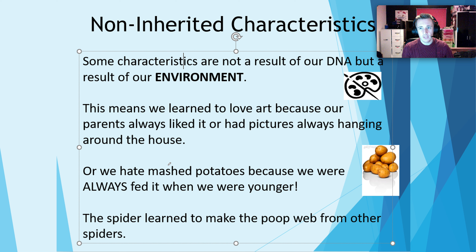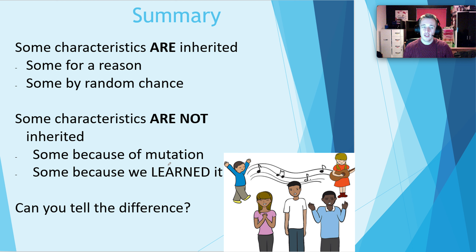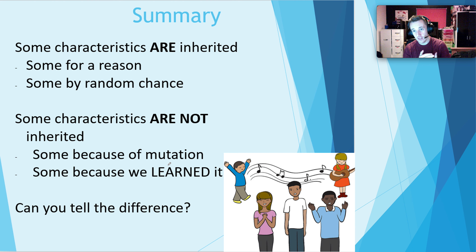Same with food — a lot of foods come down to whether you learn to like them or not, often depending on whether you've tried them or had too much of them. So to summarise: some characteristics are inherited, some for a reason and some by chance. Some characteristics are not inherited — that might be because of a mutation, i.e. a variation and a change, or it might be because we learnt it. For example, you may learn to play the piano but neither of your parents can — you're not born with it, and it's not inherited because you have learnt it.